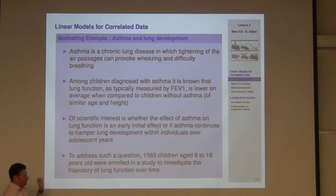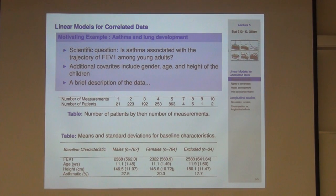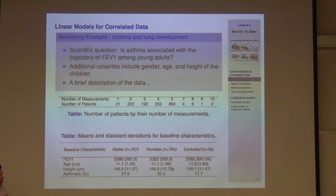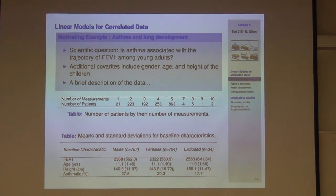The dataset we have on the course web page contains roughly 1,500 kids aged 8 to 18, and the idea is to investigate lung function over time. Starting with the next lecture, we'll focus on descriptive statistics and exploratory data analysis, primarily geared toward the correlation structure, since that's new at this point.